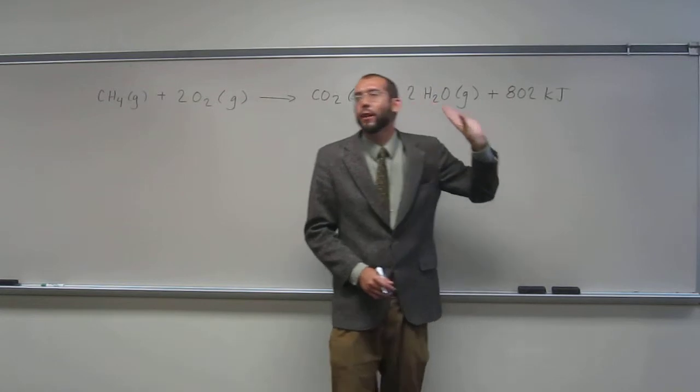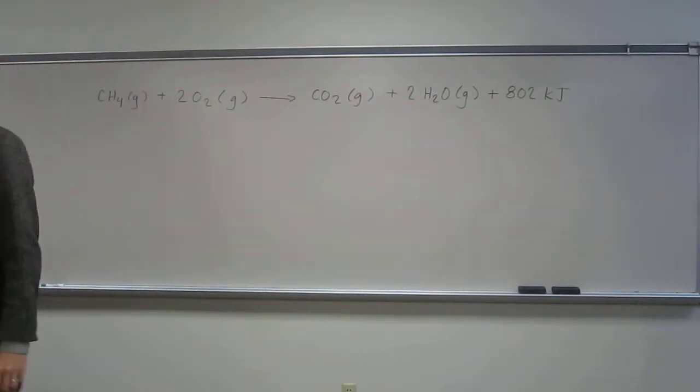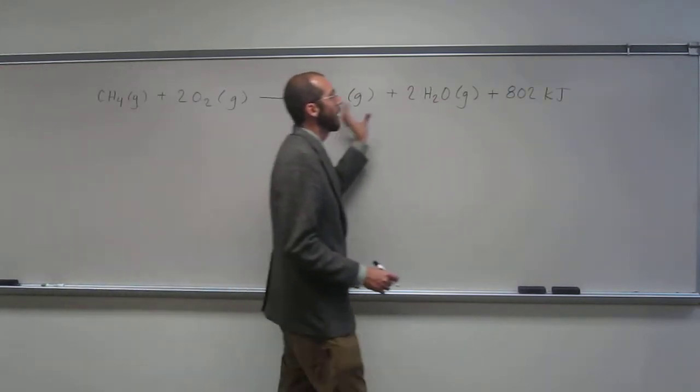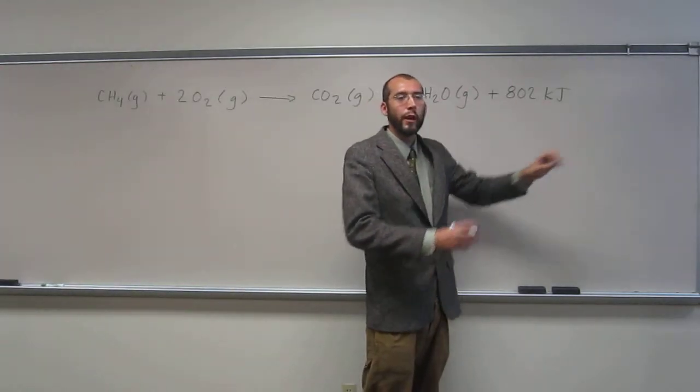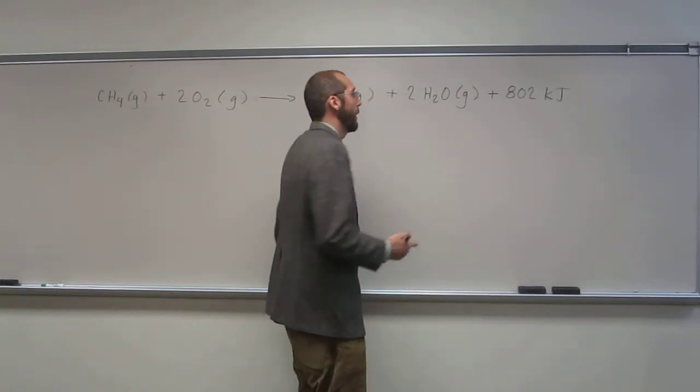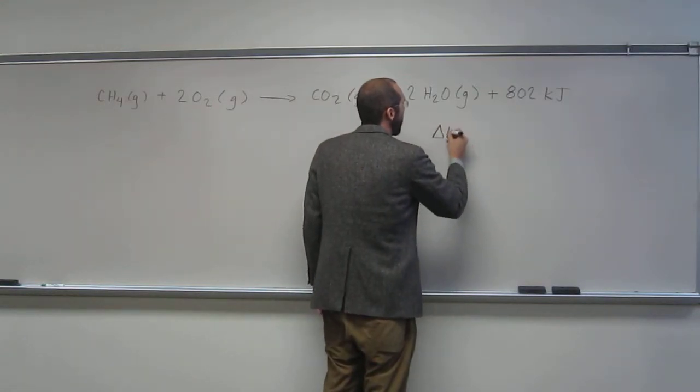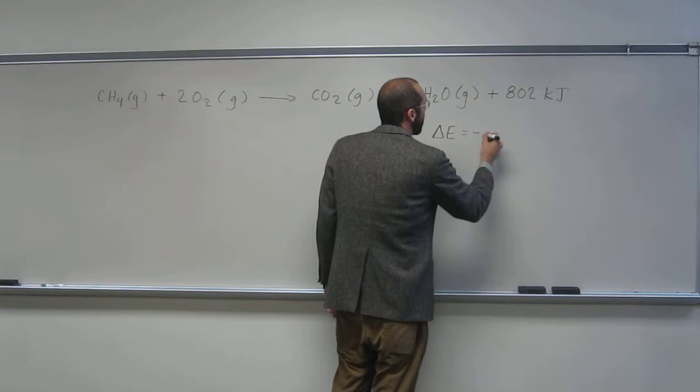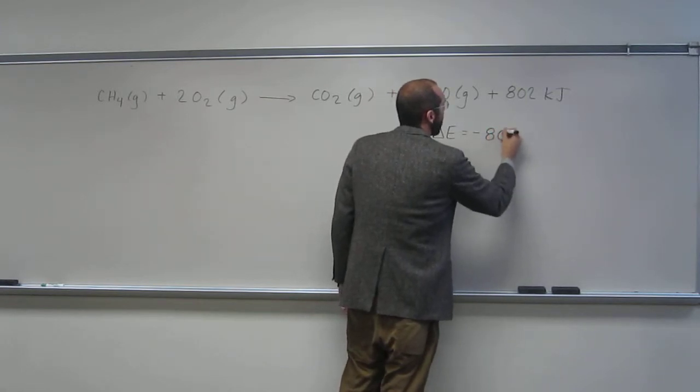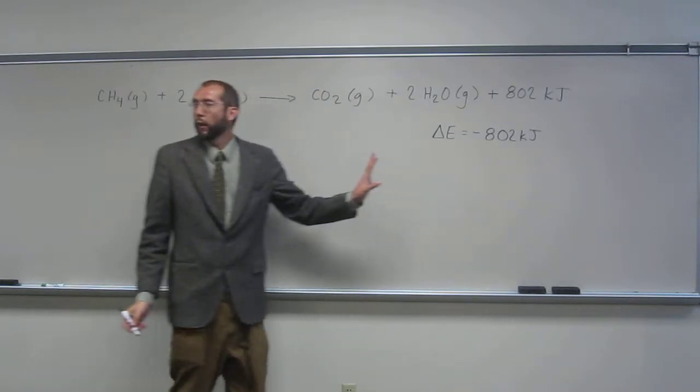So you can think of energy as a product of the reaction if you want to like that. You can also think of it like, since you're getting it out of the reaction, it's being released by the reaction, so that means it's negative in energy. So you can think of, in this case, delta E being negative 802 kilojoules. Is everybody okay with that?